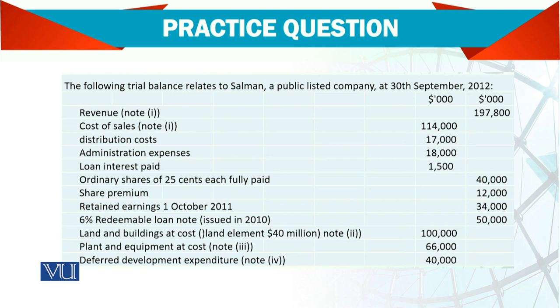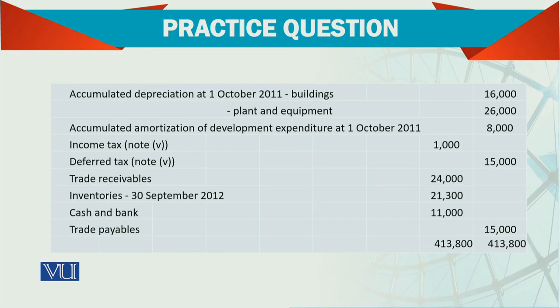Regarding research and development expenditure: research cost is charged to the profit and loss account, but development cost is capitalized. We then amortize it — like depreciation. Development expenditure is an intangible asset, so the word 'amortization' is used. The opening balances include accumulated depreciation for assets and accumulated amortization for development expenditure — both are essentially depreciation provisions.